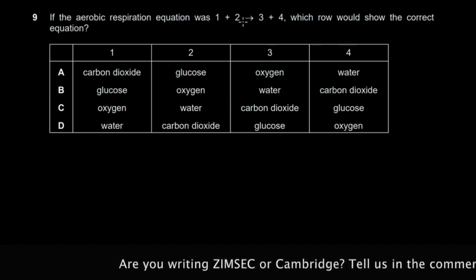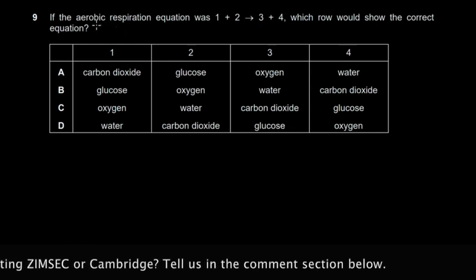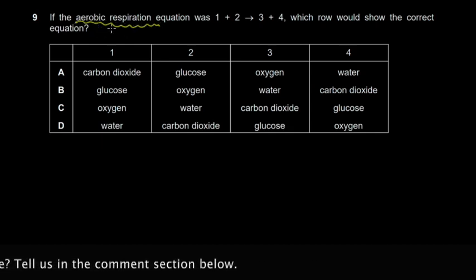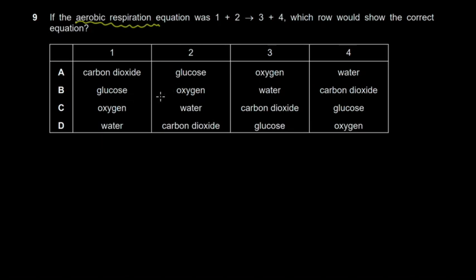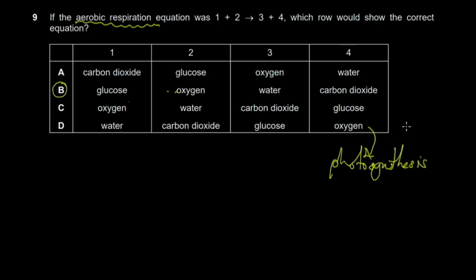Question nine asks which equation represents aerobic respiration. Aerobic means in the presence of air, so oxygen is required. By inspection, it must be the equation containing both glucose and oxygen. Glucose plus oxygen gives water plus carbon dioxide plus energy (ATP). The reverse — water plus carbon dioxide giving glucose and oxygen — is photosynthesis, not respiration.